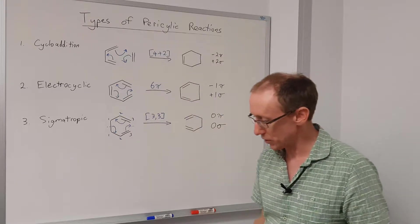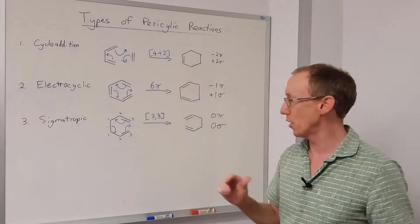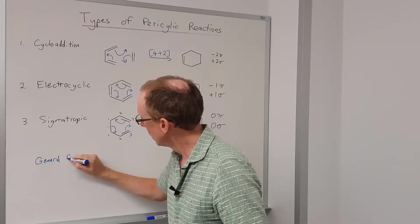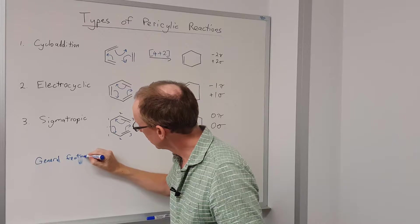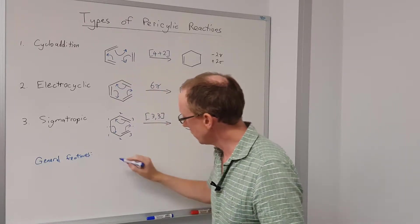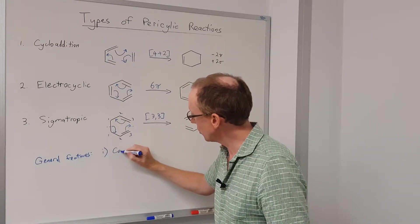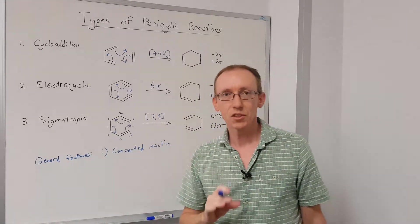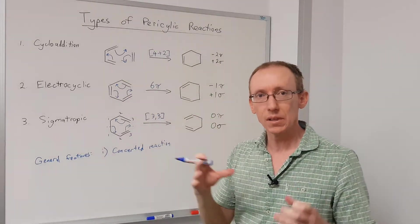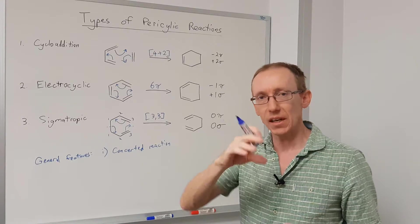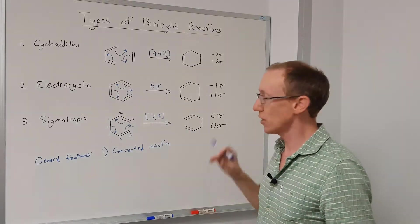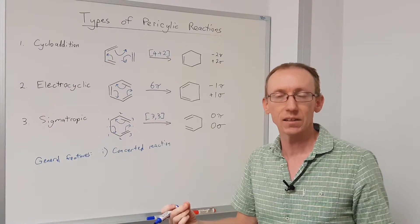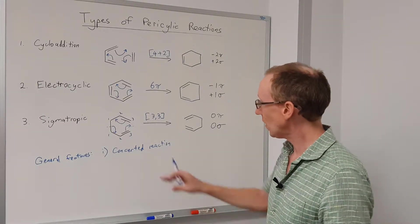Okay, so there are the three types of pericyclic reactions, and there's four general features to note about these reactions. General features of pericyclic reactions include the fact that we have a concerted reaction. So what do we mean by concerted? When we say concerted, we mean that all of the breaking bonds and all of the forming bonds are broken and formed at the same time. There's not an intermediate along the reaction pathway. And so that's very different to many of the other reactions we look at in organic chemistry, where we may have intermediate carbocations or carbanions or intermediate radicals. So it's a concerted process.